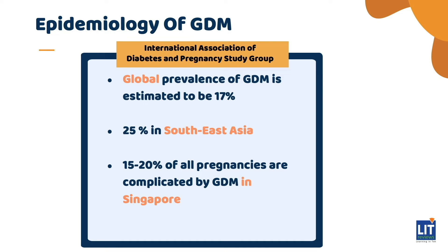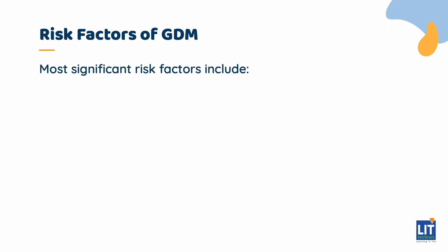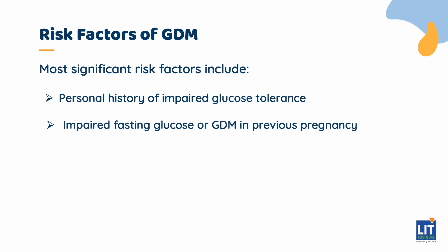Using the International Association of Diabetes and Pregnancy Study Group's screening and diagnostic criteria for diabetes and pregnancy, global prevalence of GDM is estimated to be 17%, and 25% in Southeast Asia. Specifically, in Singapore, about 15-20% of all pregnancies are complicated by GDM. The highest risk factor for GDM is personal history of impaired glucose tolerance, impaired fasting glucose, or GDM in a previous pregnancy.